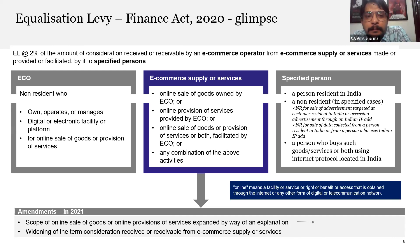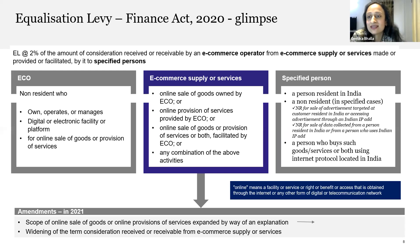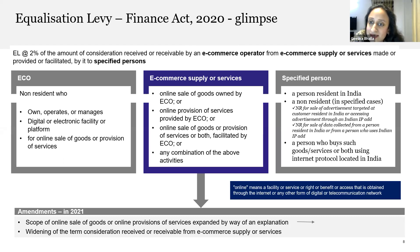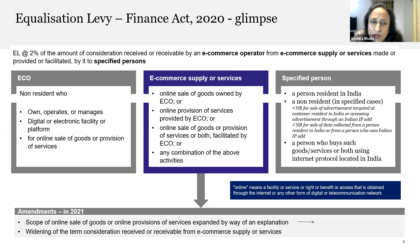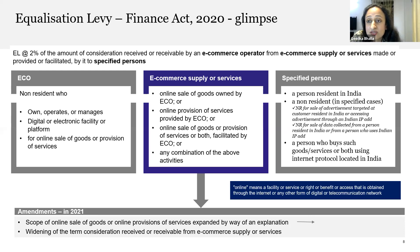One question: how does a non-resident use an IP address in India? Let's say there is a non-resident who is traveling to India and stays at a hotel. The person uses the hotel's internet protocol address — which is from India — and books a ticket, say from Delhi to Mumbai, on the website of a foreign e-commerce operator. So even though the person is a non-resident, they may be using an internet protocol address in India, and equalization levy provisions may be applicable.